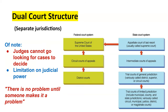It is a dual court structure. We have a state court system and a federal court system. The only time the state appellate court would be overruled is if it was being appealed to the Supreme Court, and that doesn't happen often. As a dual court structure, they are separate jurisdictions in terms of the roles they play. Judges don't go looking for cases — the cases come to them.